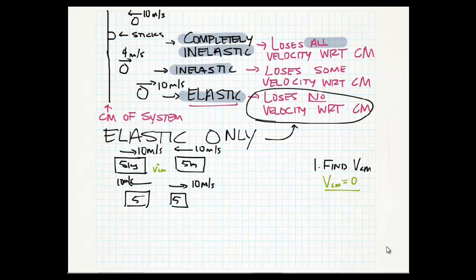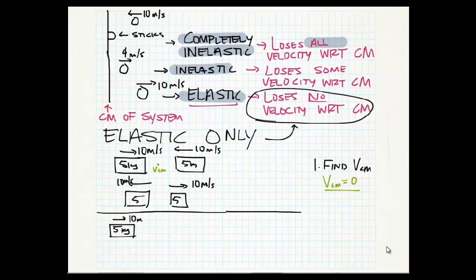That was a very simple example, so now we're going to get a little bit more complicated. For the next example, we're using the same two masses: 5 kilograms traveling at 10 meters per second, but we're going to put the other one at rest — 5 kilograms, not moving. What we need to do first is find the velocity of the center of mass.